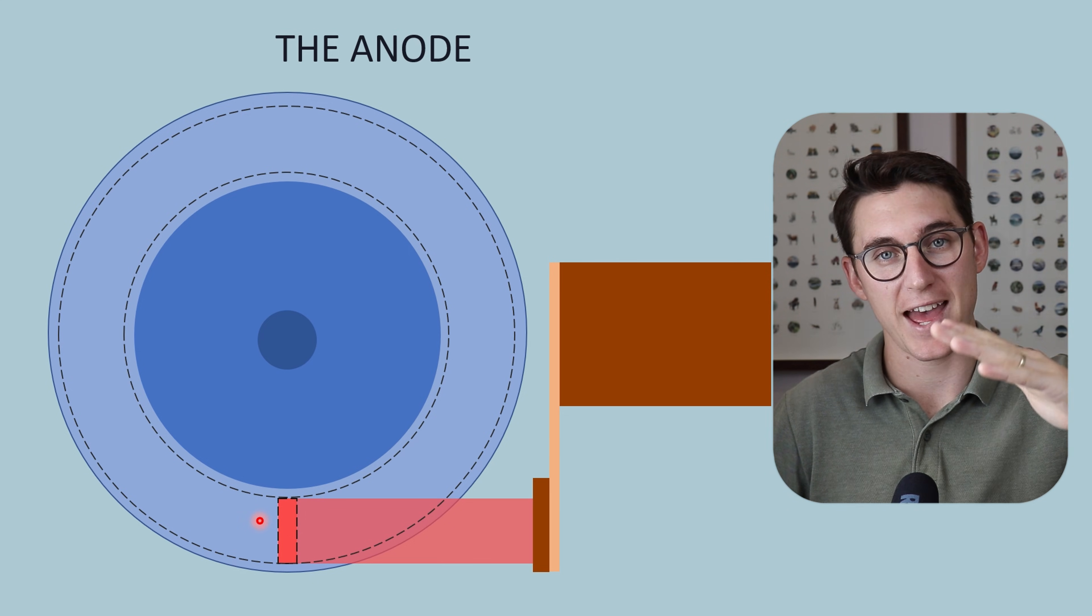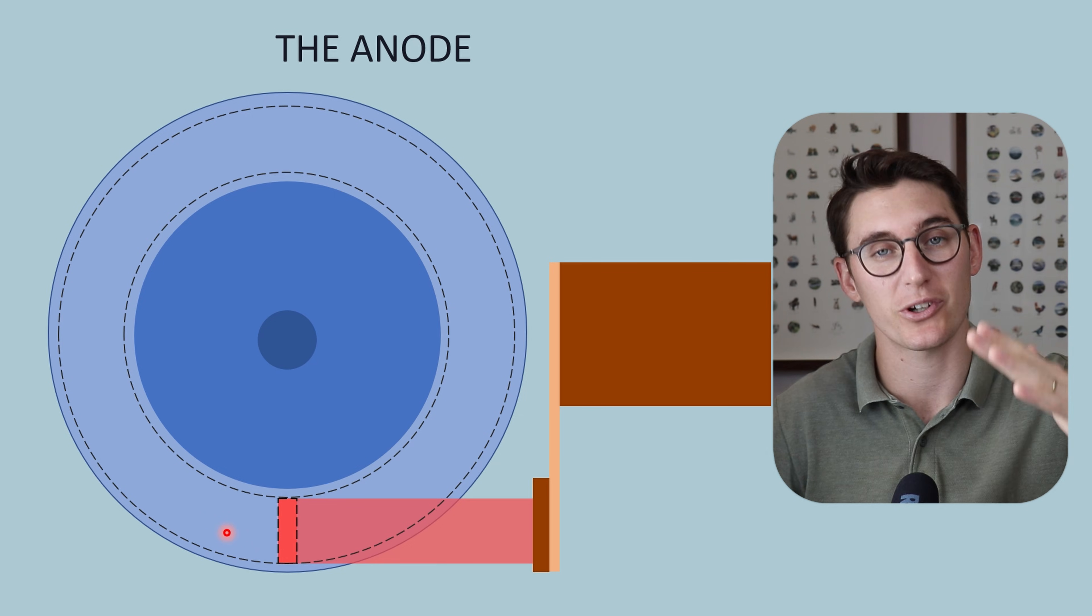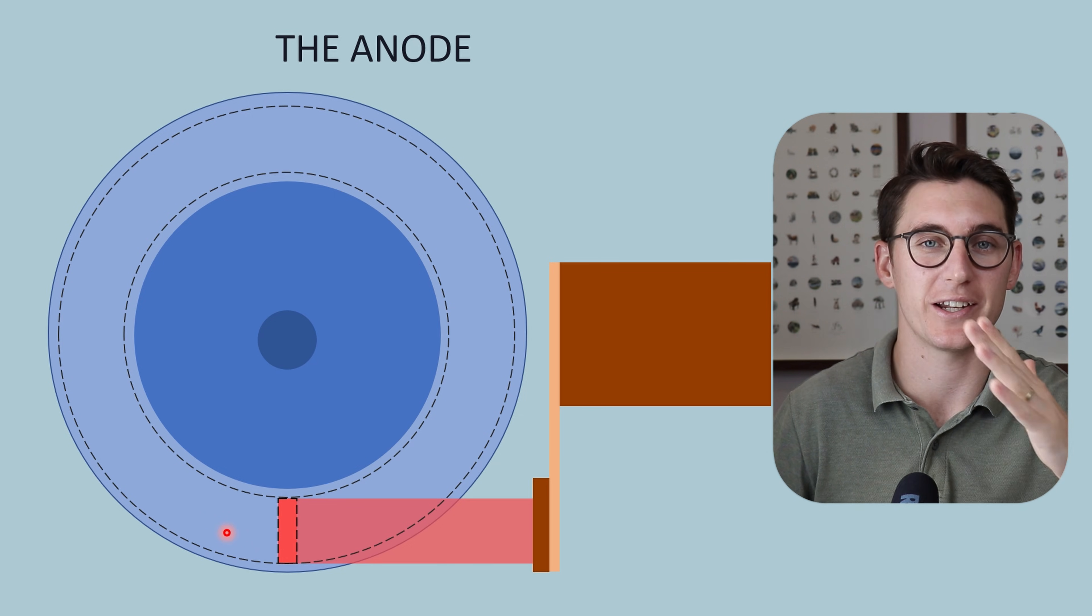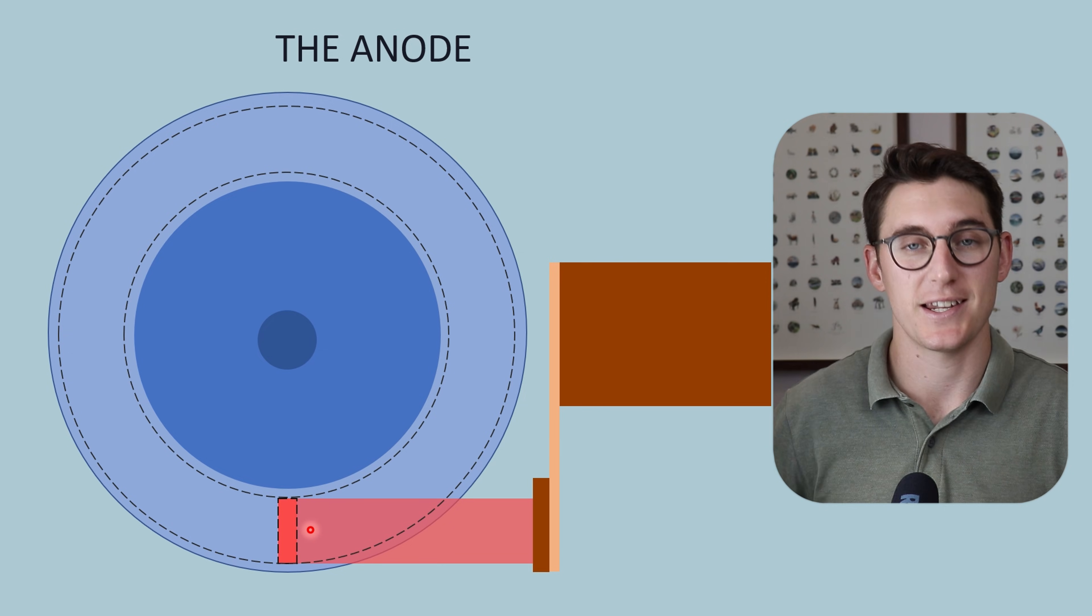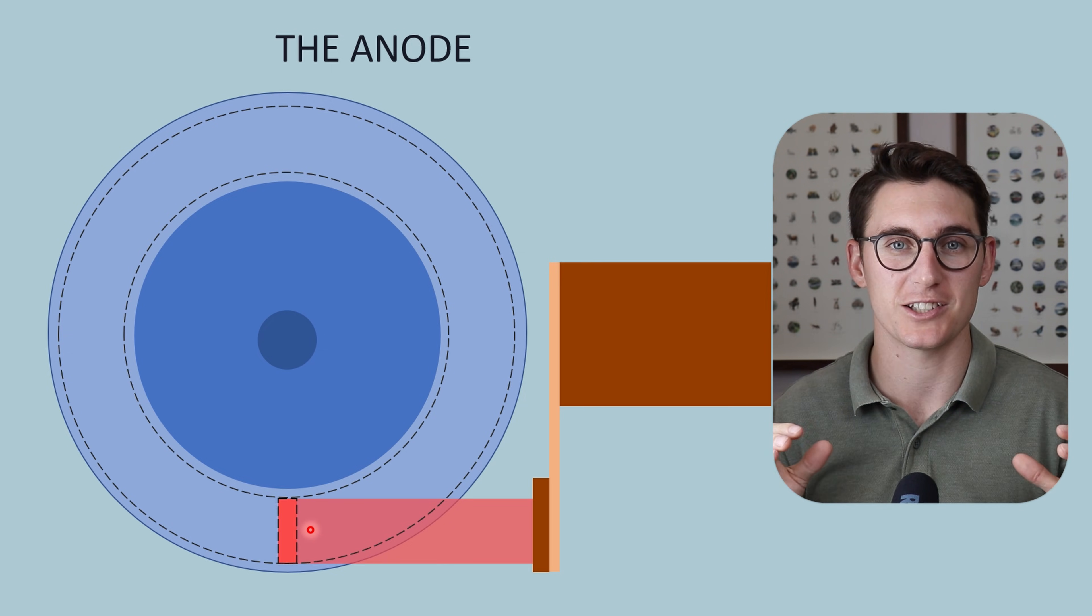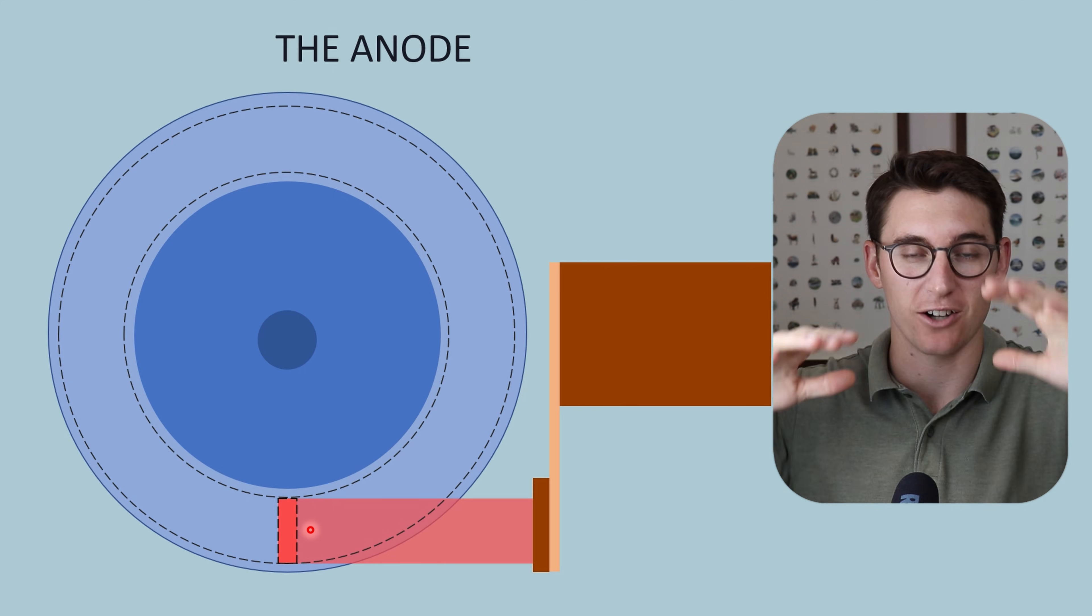I mentioned that the anode angle changes the size of the actual focal spot. If we increase our anode angle we can tolerate slightly more heat at the anode. Next, we'll look at how there are mechanisms in which heat is moved away from this focal spot towards our tube housing.